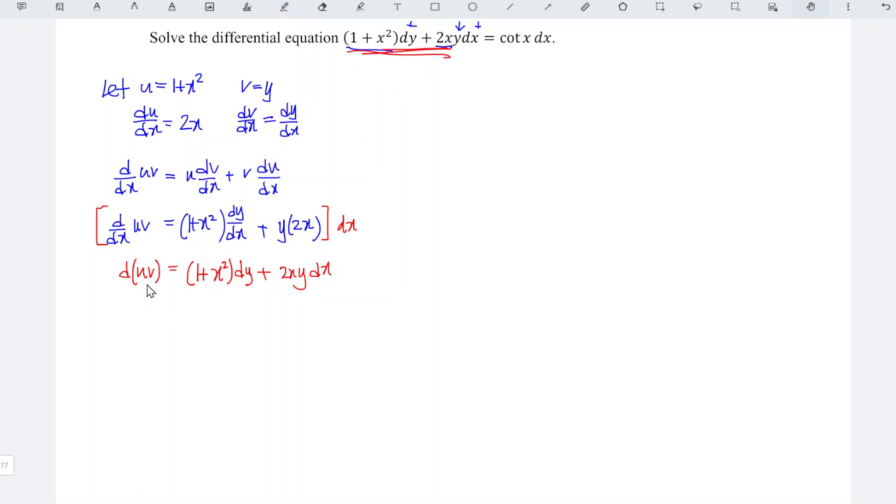So which means that what we need here is differentiate uv is equal to cotangent x dx, where u is 1 plus x square and v is y. So which means that if we differentiate 1 plus x square times y is equal to cotangent x dx.